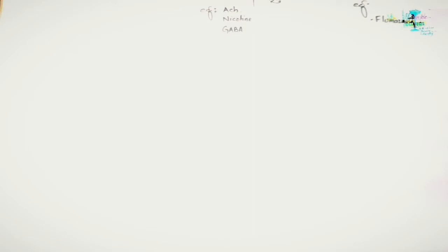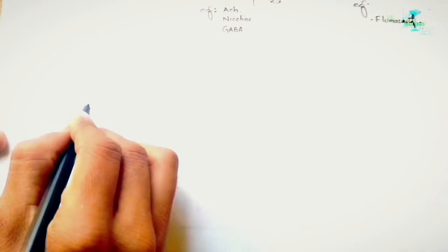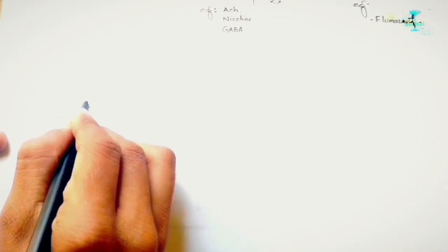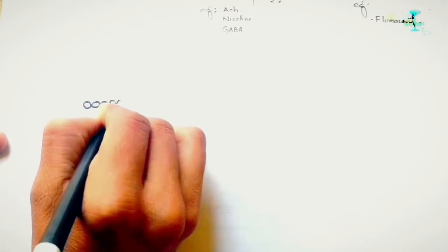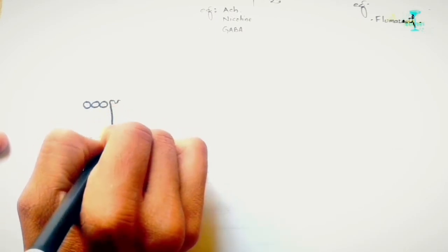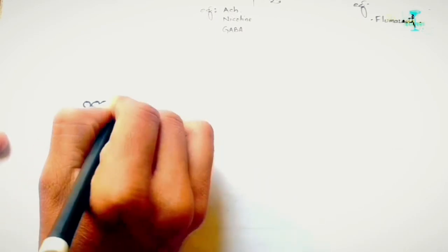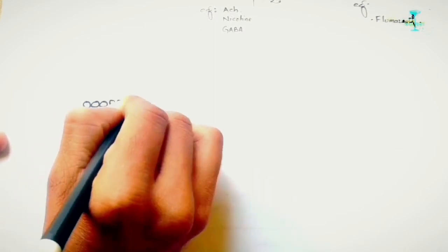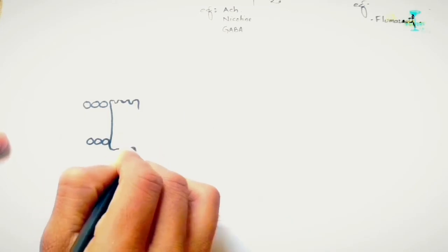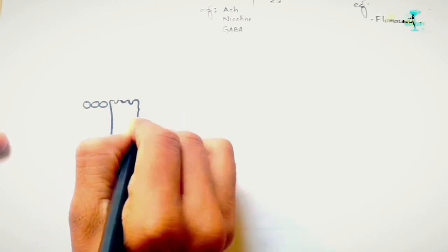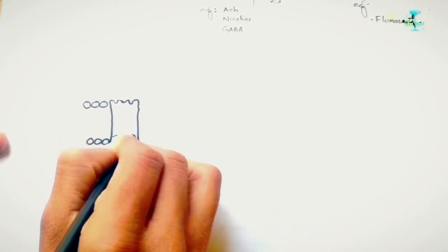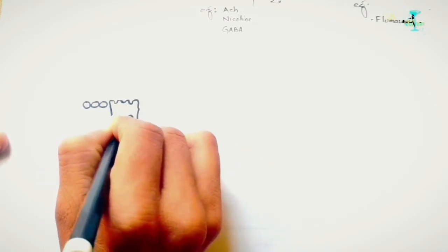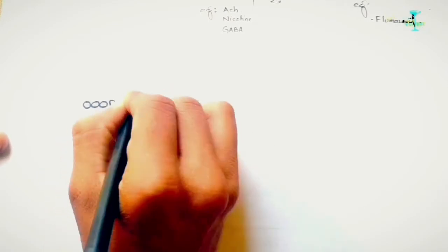The second type of receptors are enzyme-linked receptors. In the absence of an agonist, the enzymes linked to these receptors are inactive. They mostly occur in the form of a dimer which spans the membrane once.